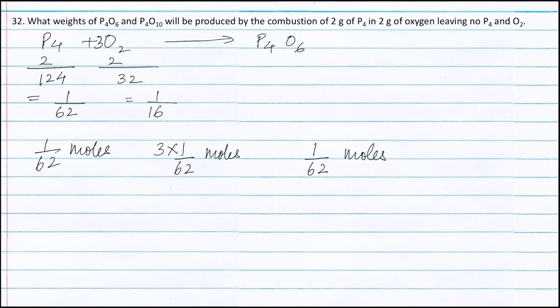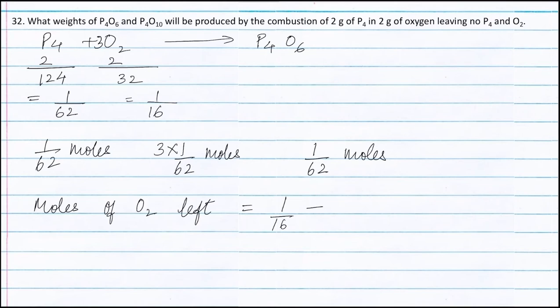Whatever oxygen is left from this reaction will react with P4O6 to form P4O10. Moles of oxygen remaining is equal to 1/16 minus 3/62, which is equal to 0.0141 moles. Moles of P4O6 formed in this reaction is 1/62 moles.